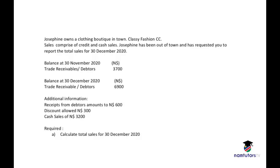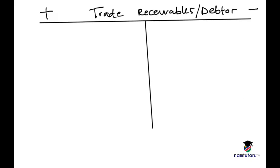We need to calculate total sales for 30 December 2020. We have all the information we need, but sales is missing. We will draw up the trade receivables or debtors account, put in all the information, and from there calculate the sales.